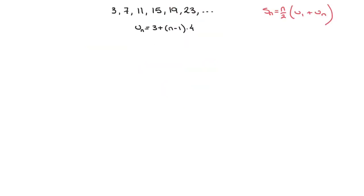As a second example, say we're dealing with the same sequence again — 3, 7, 11, 15, 19, 23, and so on. We're also given the formula for the nth term of this sequence: un = 3 + (n − 1) × 4. Now let's say we need to calculate the sum of the first 20 terms — in other words, what is S20? Looking at the formula, all we need to do is replace every n by 20, giving S20 = 20 over 2 times (u1 plus u20).